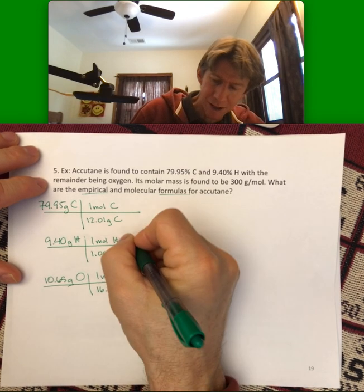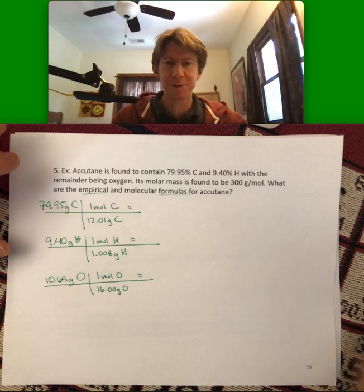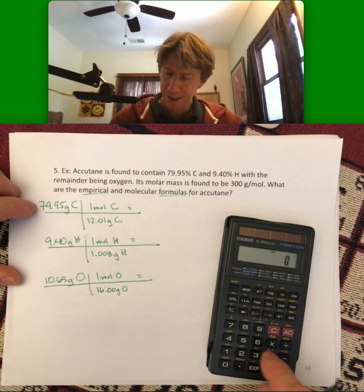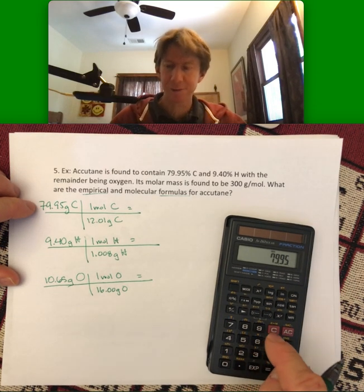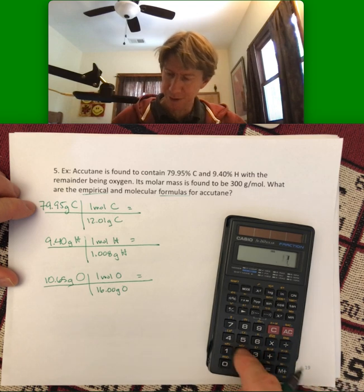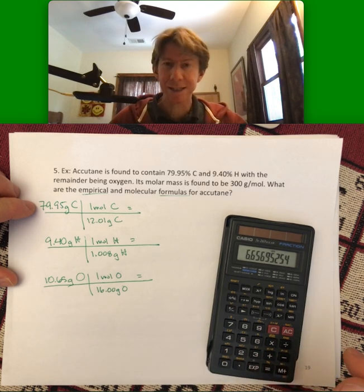My picket fences are a little long for what I need, but I'll still fill in my answers right here. 79.95 divided by 12.01, I get 6.66.